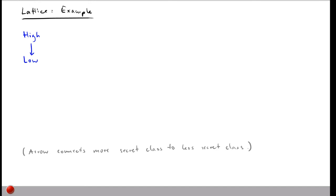Sometimes two classes may not be enough — for example, when you have different levels of people with different kinds of information and you want different security levels to represent that hierarchy. One way to do this is to define multiple security classes where one is always more secret than another. For instance: top secret at the top, then secret, then confidential, and at the bottom public, meaning information that everybody can see. Each class is stacked on top of each other with the most secret one at the top.